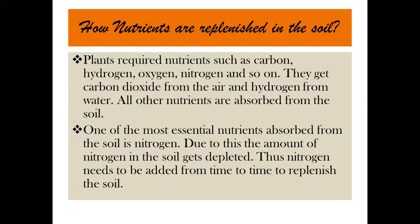Do you know why fertilizers are added to the soil and where do plants get nitrogen from? Plants require nutrients such as carbon, hydrogen, oxygen, nitrogen and so on. They get carbon dioxide from the air and hydrogen from water (H₂O), and all other nutrients are absorbed from the soil. So where does nitrogen come from in the soil? Nitrogen is one of the most essential nutrients absorbed from the soil, and due to this the nitrogen in the soil gets depleted. It needs to be added from time to time to replenish the soil.